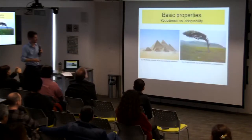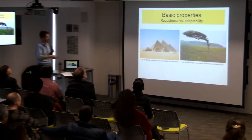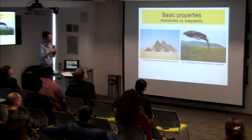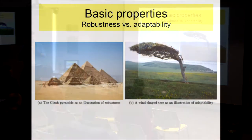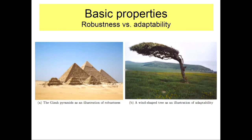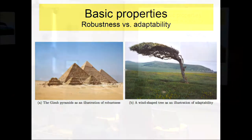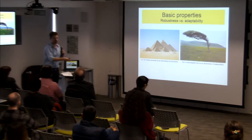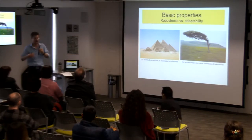So the idea is to use time series of physiological parameters to gain insight into the stability of the human body. For example, the Egyptian pyramids are very resistant to outside perturbations. But if a perturbation were strong enough to topple them, they would not be able to put themselves upright again.